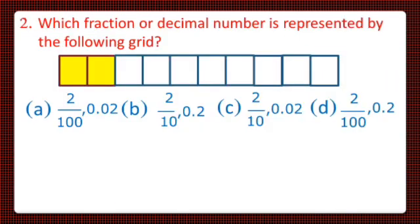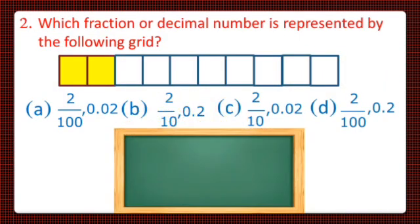Question number 2 is which fraction or decimal number is represented by the following grid? So dear students, four options are given and we have to choose the correct option. So first of all, let's find the fraction from the grid. So the total parts of the grid are 10, so denominator is 10, and the colored parts are 2, so the numerator is 2. So 2 by 10 is the fraction.